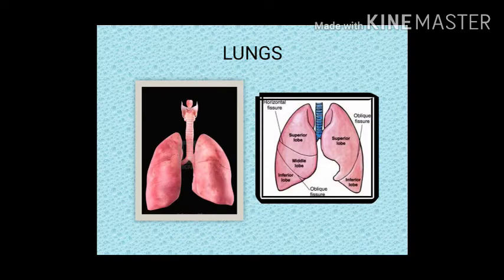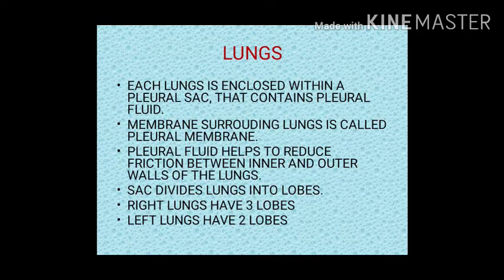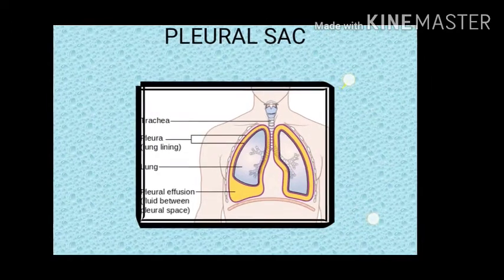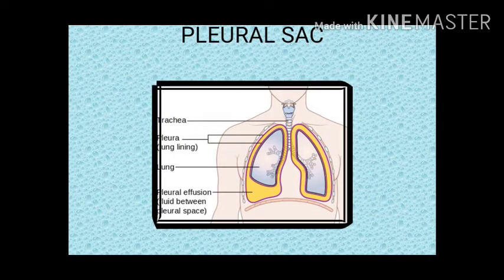In this diagram you can see the pinkish color of the lungs, as well as the larynx, trachea, and primary bronchi. The right lung is bigger than the left and has three lobes, while the left lung has only two lobes. Each lung is enclosed within a pleural sac that contains pleural fluid. The membrane surrounding the lungs is called the pleural membrane. Pleural fluid helps reduce friction between the inner and outer walls of the lungs.